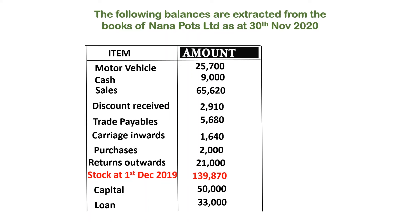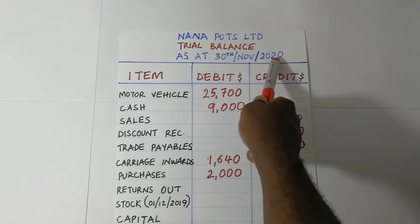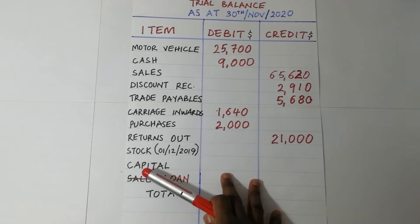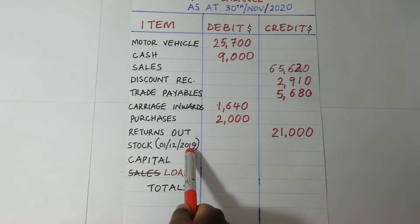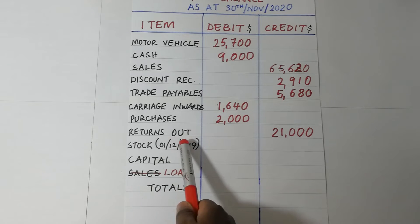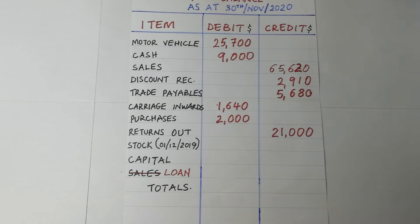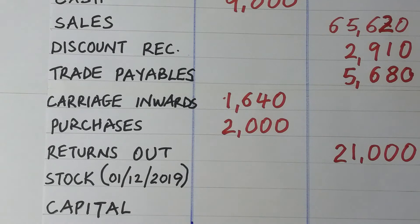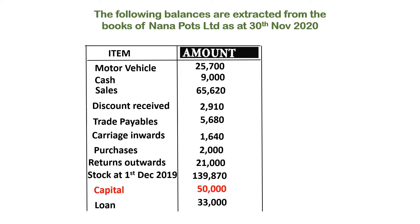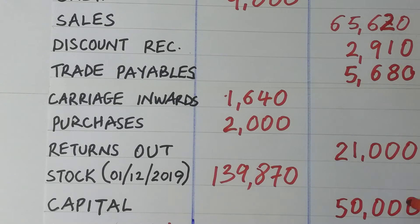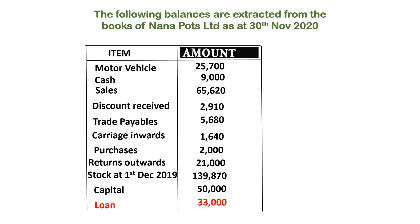Then we have stock as at 1st December 2019. Since we are preparing the trial balance as at 30th November 2020, stock as at 1st December 2019 is the opening stock. Opening stock is an asset and assets always have a debit balance. Then we have capital, which is a credit balance, posted on the credit side. Finally, we have the loan — a long-term liability — and all liability accounts have a credit balance.